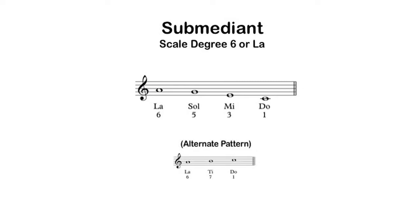Scale degree 6 has an alternate pattern that goes the opposite direction, moving up by step to get to tonic: six, seven, one — or la, ti, do. Sometimes you'll just hear a melody wanting to move that direction, especially if it's trying to increase the amount of energy towards tonic.